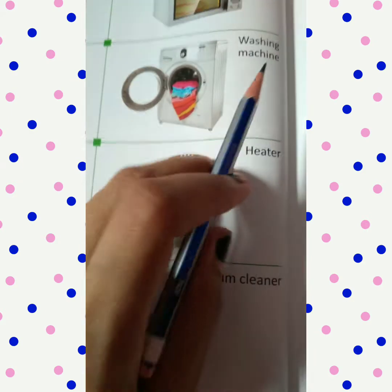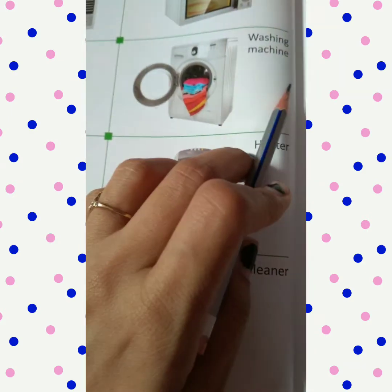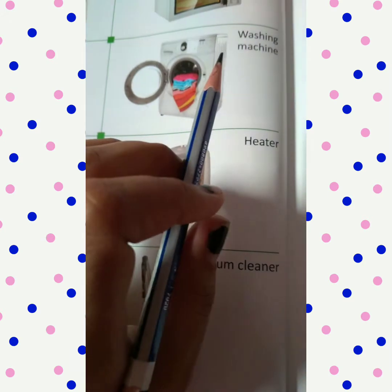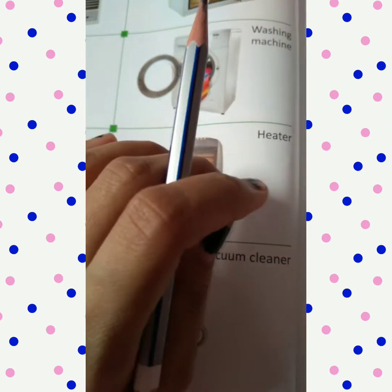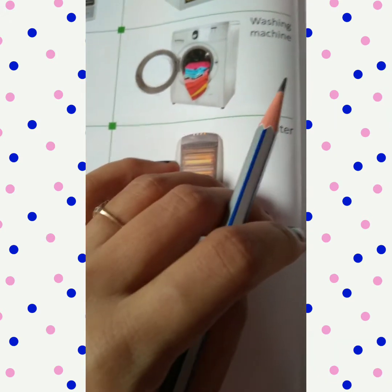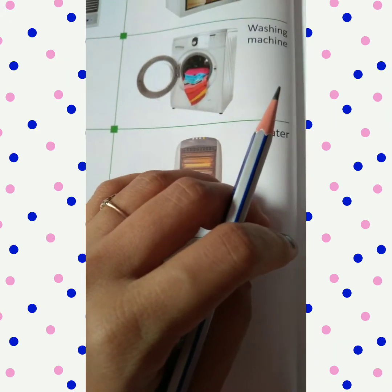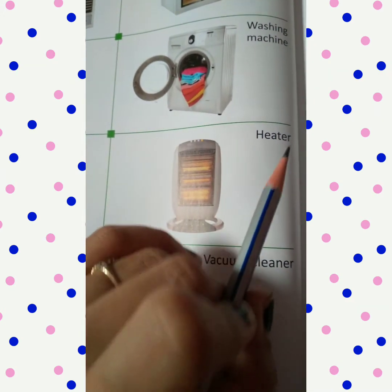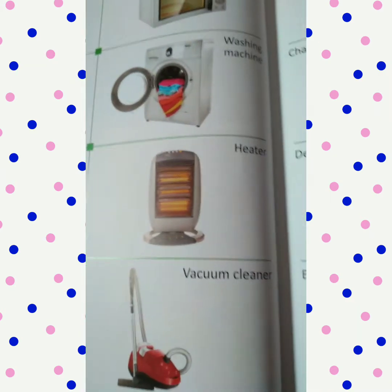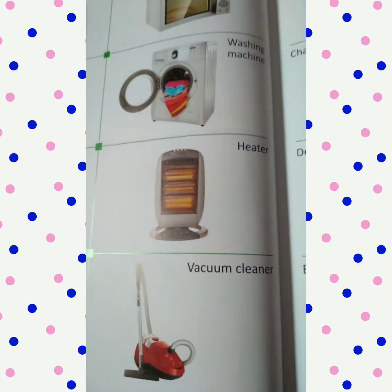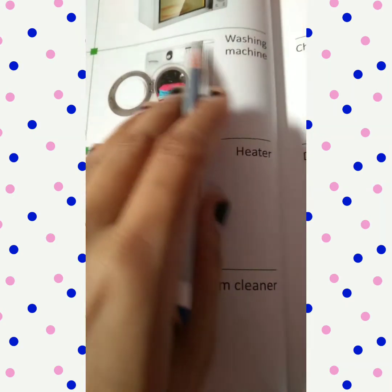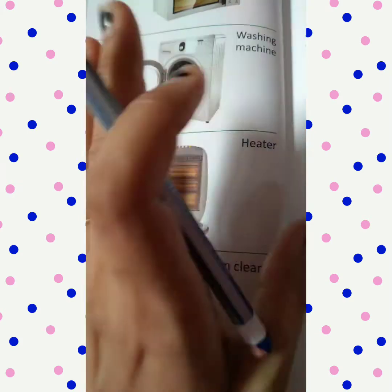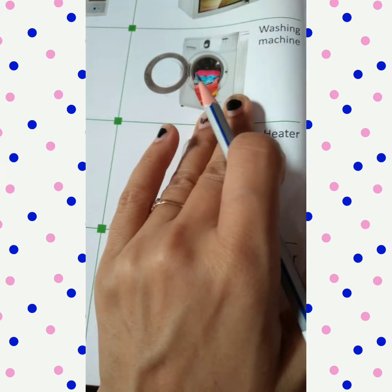Now, the washing machine: W-A-S-H-I-N-G M-A-C-H-I-N-E. You must have heard that slogan — 'Daag achhe hain.' Yes, when we have a washing machine at home, all the stains get washed here only. So, washing machine!